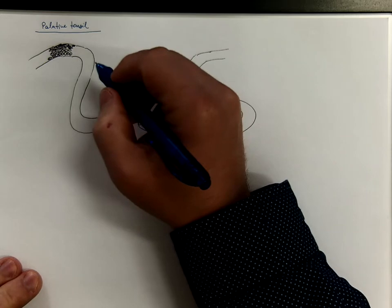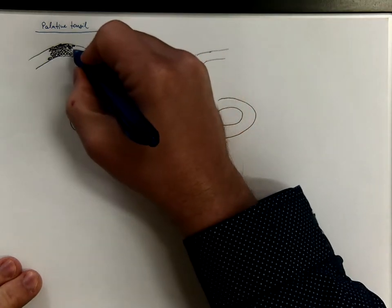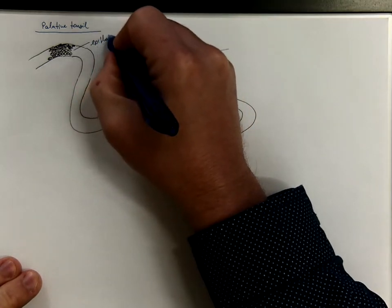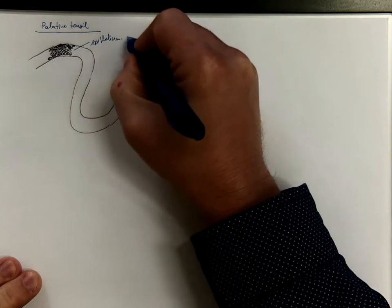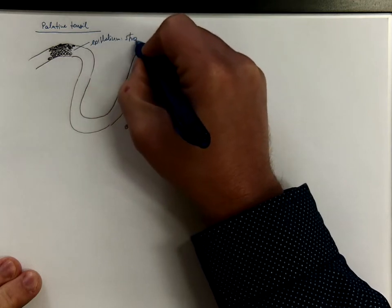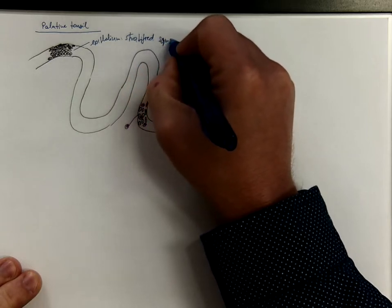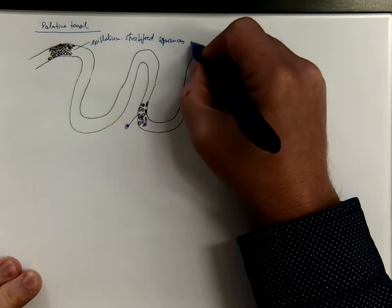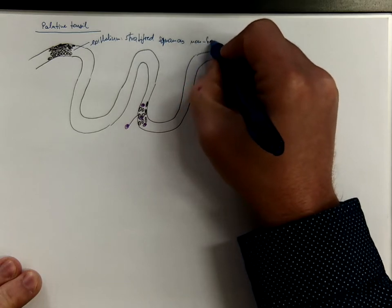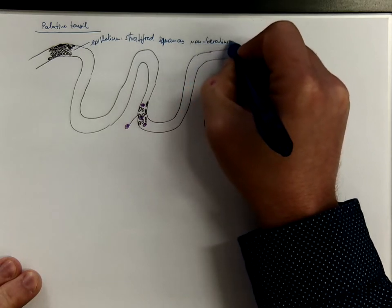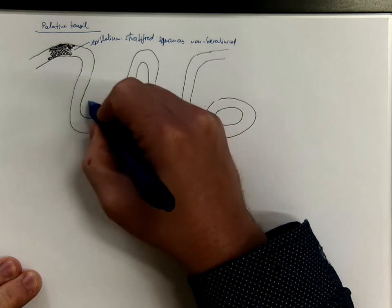So if this is the epithelium, it's stratified squamous non-keratinized. We have these crypts.